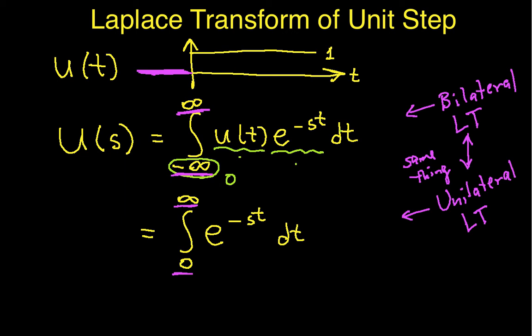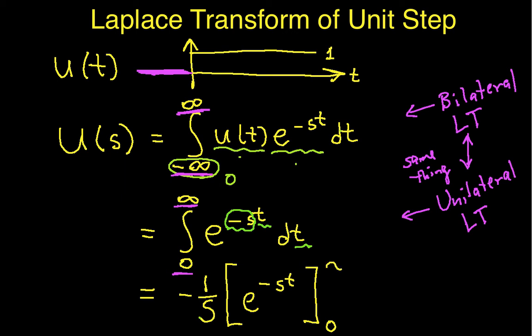Now the only thing left to do is to work out this integral. Recall that this is an integral with respect to t, so the minus s is a constant in terms of this integral. I have e to a constant times t, so when working the integral, it's going to be 1 over that constant times e to the minus st, evaluated at 0 and infinity.